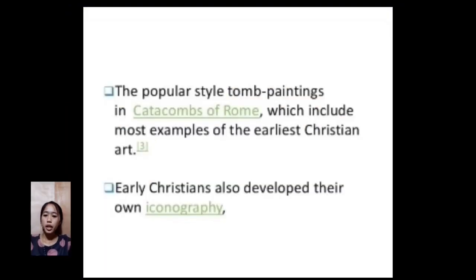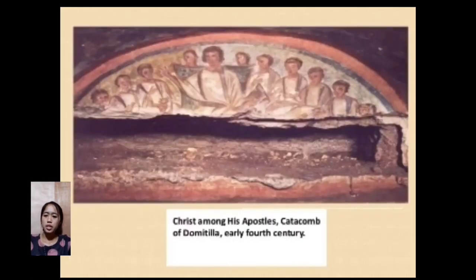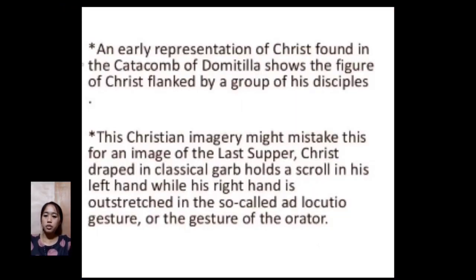Early Christians also developed their own iconography. One of the images represented most in the art of the catacombs is the Good Shepherd. Another painting is Christ among his apostles, Catacombs of Domitilla, early 4th century — an earlier representation of Christ shows the figure of Christ flanked by a group of his disciples.